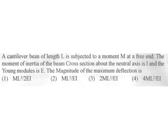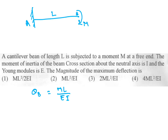A cantilever beam of length L is subjected to a moment M at the free end. The moment of inertia is I and Young's modulus is E. Slope at B = ML/EI and deflection at B = ML²/(2EI). Option 1 is the answer.